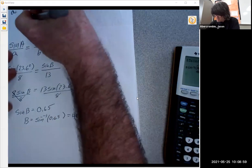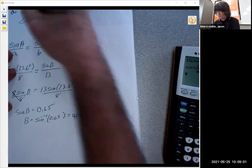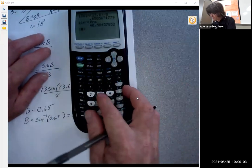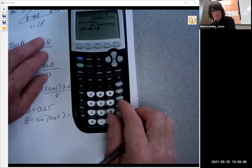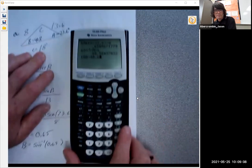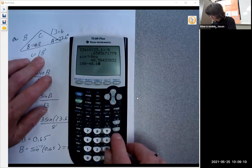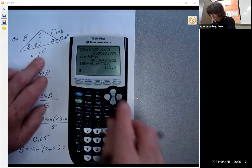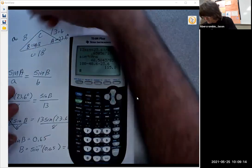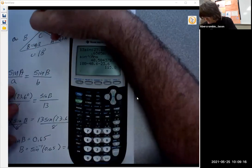This is 40.6. And then finally, you can take 180, subtract off 40.6, and subtract off 23.6, and you get 115.8 for that last one, 115.8.